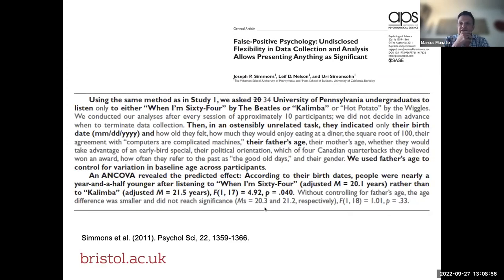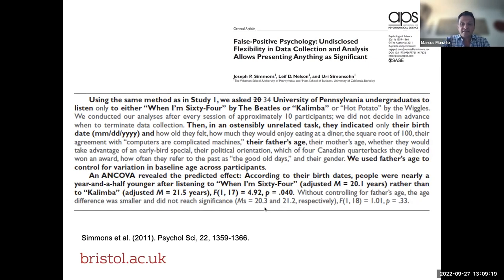So why does that matter? This is a study from my own discipline — psychology — where researchers collected real data and showed that when participants were randomised to listen to 'When I'm 64' by The Beatles, they became younger. Not that they felt younger, but that you actually turn back the arrow of time and they lose a year of life — which is clearly a false finding. What it demonstrated was that if you build enough flexibility into the design, conduct, and analysis of your study, you can arrive at a small p-value for an effect even though that is clearly false.